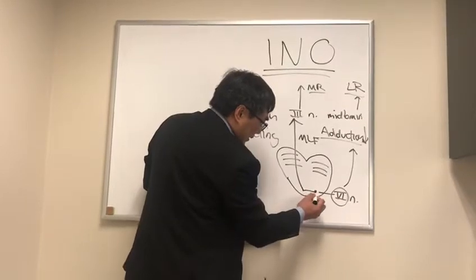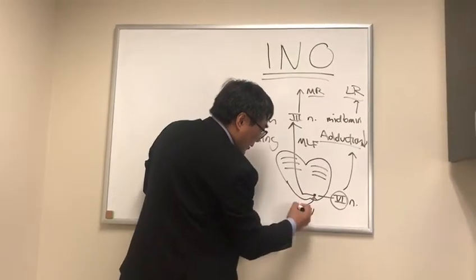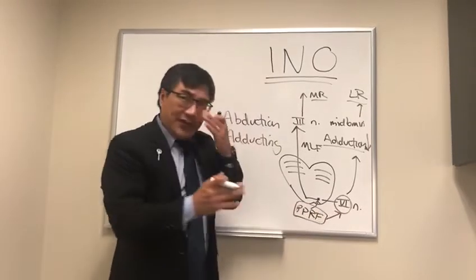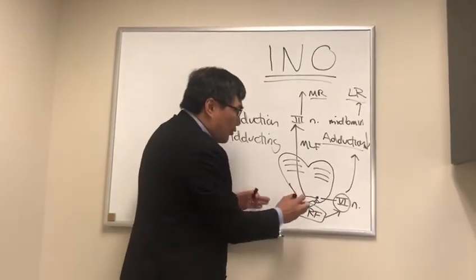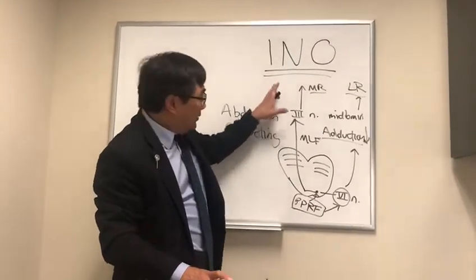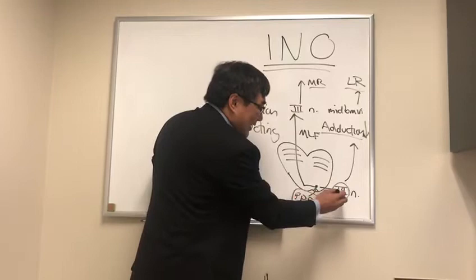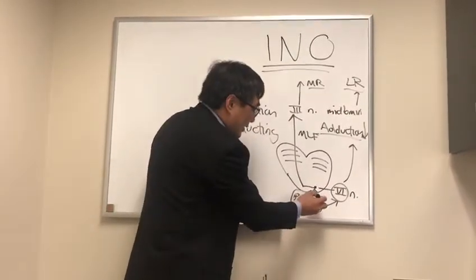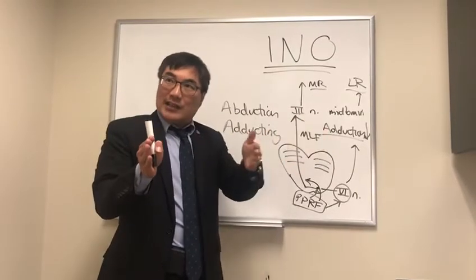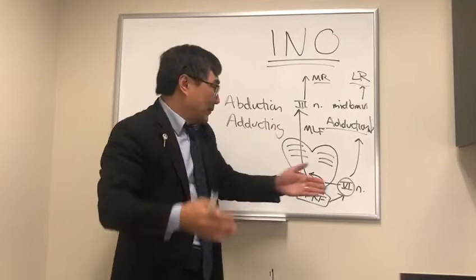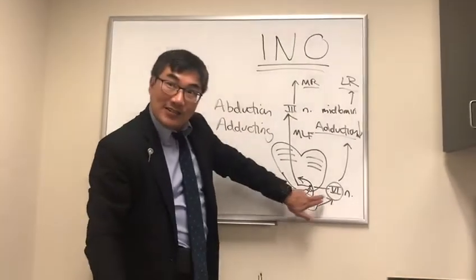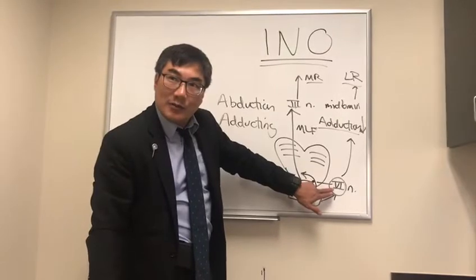It's an interneuron that is in the pons — specifically from the parapontine reticular formation to the sixth nerve nucleus, which is the final common pathway for horizontal gaze. You get disruption of the signal telling the lateral rectus to fire, but not from the MLF to the contralateral medial rectus. Because the signal is still intact to tell the medial rectus to fire, you'll have an abduction deficit with an adducting nystagmus from the continued firing of the medial rectus.